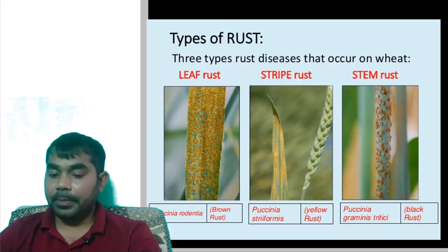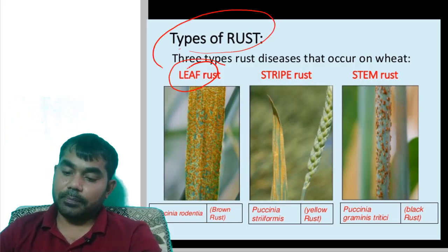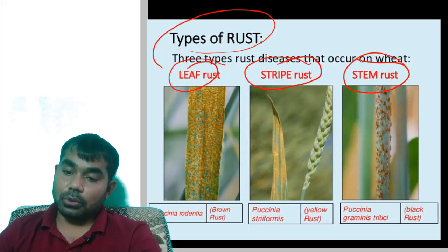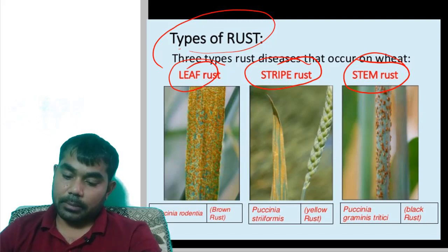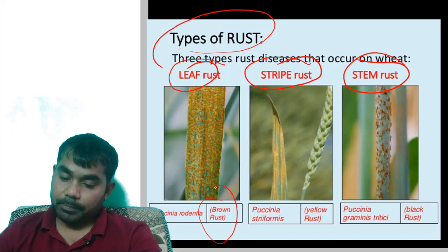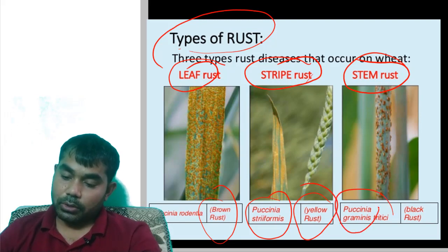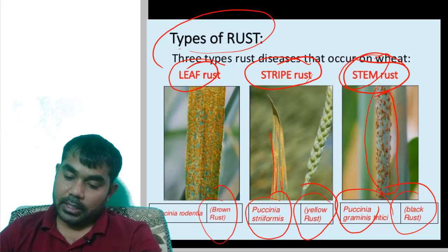The three types of rust are: leaf rust caused by Puccinia recondita (also called brown rust), Puccinia striiformis which is strip rust or yellow rust, and Puccinia graminis tritici which is black rust or stem rust. Leaf rust appears scattered, while strip rust appears in a zig-zag pattern.